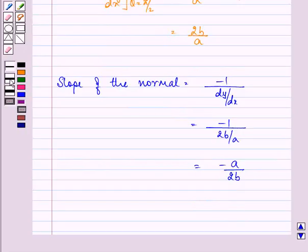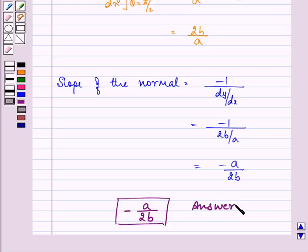So the answer to the question is minus a upon 2b that is the slope of the normal. This is the required answer to the given question. Hope you understood it well and enjoyed it too. Have a nice day.